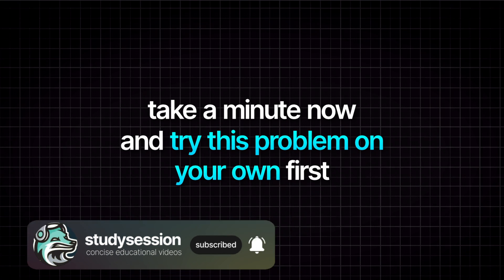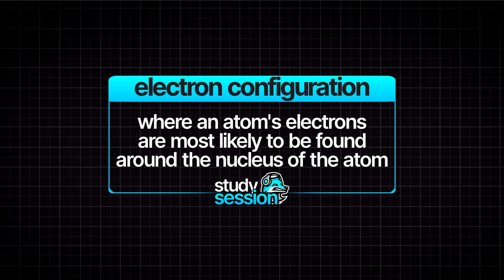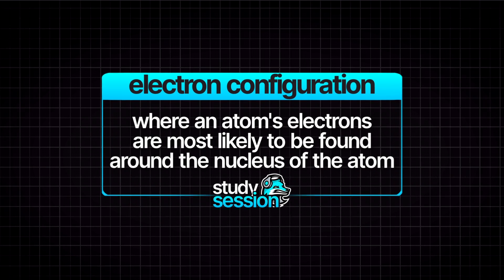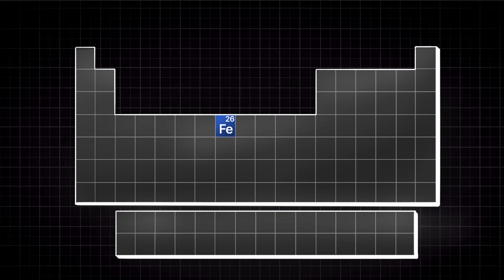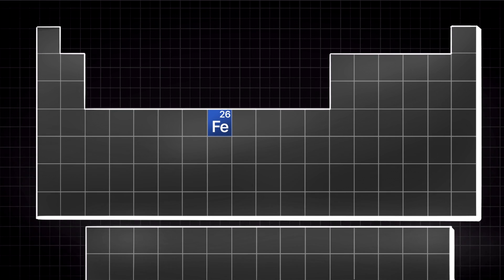When finding the electron configuration of an atom, we are being asked where does that atom place its electrons — i.e. what shells and orbitals are its electrons most likely to be found in. To solve this, the first thing we need to do is look at our periodic table and see how many electrons an iron atom actually has in its ground or unexcited state.